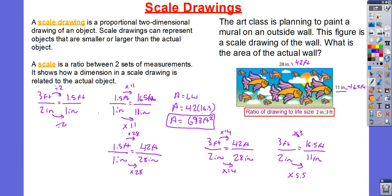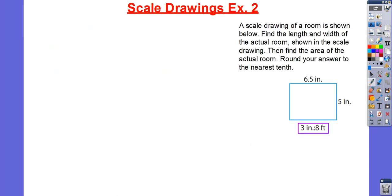Let's go ahead and take a look at another problem. A scale drawing of a room is shown below. Find the length and width of the actual room. Once again, I'm going to go ahead and try to figure out the unit rate. Then, I'm going to convert all of those inches into feet using my scale. And then, afterwards, I'm going to go ahead and find the area. Here is my scale — I have 3 inches for every 8 feet.